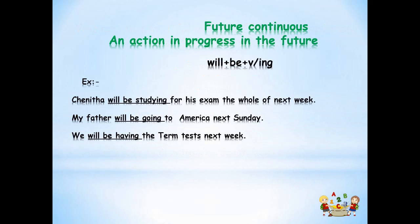We can use the future continuous tense to talk about actions happening in the future. The future continuous tense, sometimes also referred to as the future progressive tense, is a verb tense that indicates that something will occur in the future and continue for an expected length of time. Future continuous tense is formed using the construction will plus be plus the present participle — the root verb plus -ing.